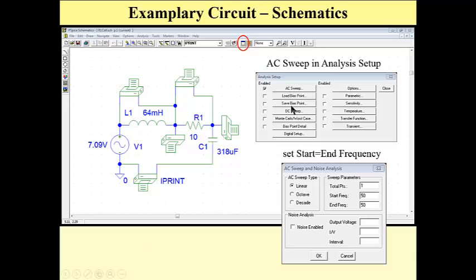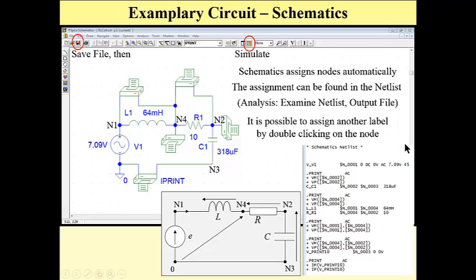Okay, now we have to select AC sweep. And as we are simulating our circuit for a single frequency, total points is one and start and end frequency is the same, 50 hertz. So now we are ready to simulate our circuit, save file and then simulate.